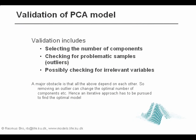We are now going to talk about the validation of PCA models. This includes selecting the number of components and also checking for outliers, which are samples that disturb the model. There are other parts of validation, such as finding irrelevant variables, but we will mainly focus on choosing the number of components and detecting outliers.